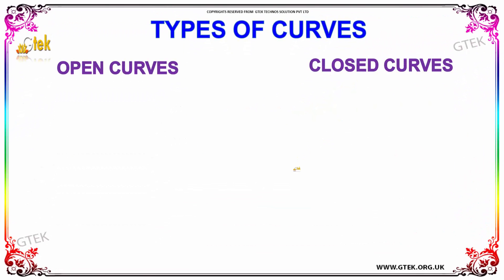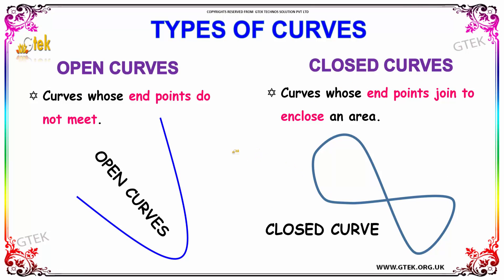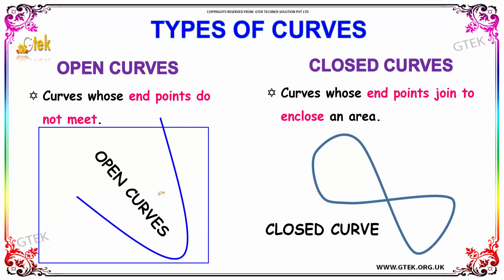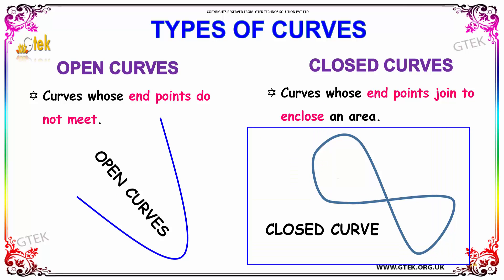Next, we are going to discuss the types of curves. Curves whose end points do not meet are said to be open curves — the end points do not meet, hence it is an open curve. Curves whose end points join to enclose an area are said to be closed curves — here you can find two enclosed areas, area 1 and area 2, hence this is a closed curve.